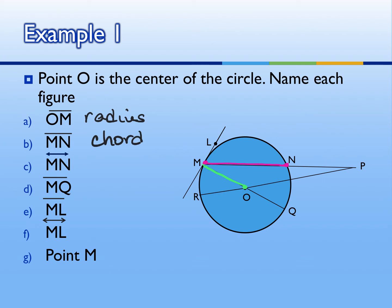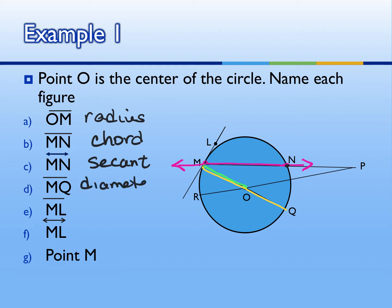For part C, same letters MN but now it has the picture of a line on top, which means line MN extends out, making it a secant because it's intersecting the circle at two points, at point M and at point N. Segment MQ goes from edge to edge through the center, making this the diameter. Technically the diameter is also a chord, but the more specific name for segment MQ is diameter.